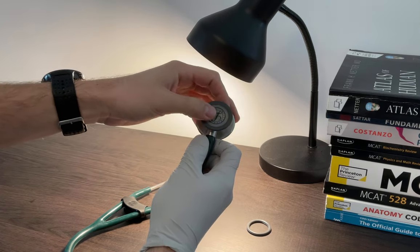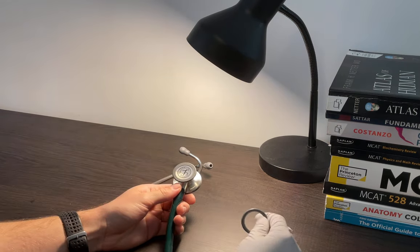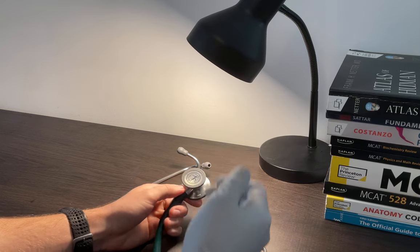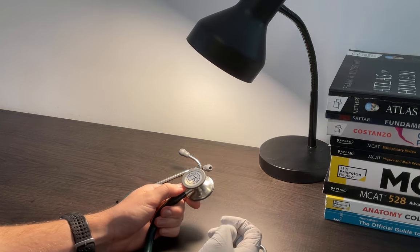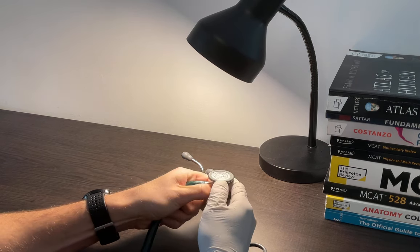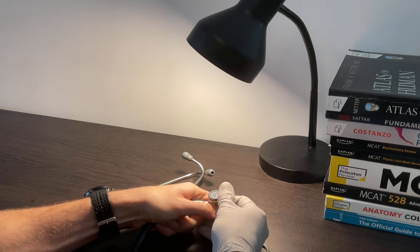If you see something like this with the Littmann L on it, this is not the bell. To actually use the bell what you'll need to do is ideally take a glove that makes it just a little bit easier to put some traction on the bell cover and kind of pop this off. Doing it with the glove makes it a lot easier although it's still not super easy.